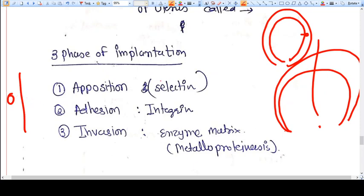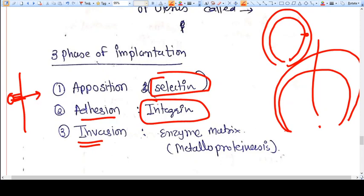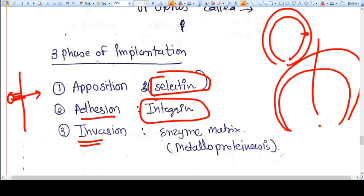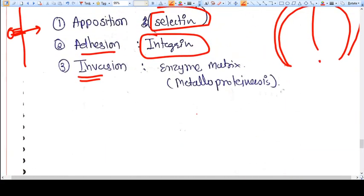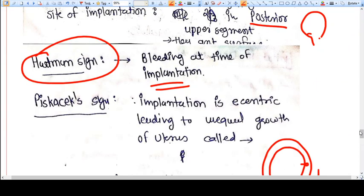Then adhesion - the blastocyst has now adhered to the endometrium, and the molecules involved are integrins. The third stage is invasion, in which the blastocyst invades the endometrium because of enzymes called metalloproteinases. This is how implantation happens. Thank you.